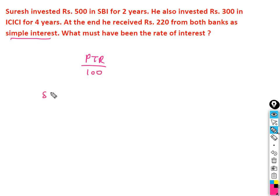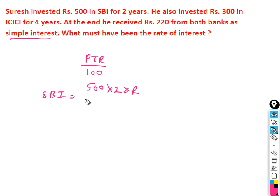First, SBI bank: principal is 500, time is 2 years, rate of interest is R, divided by 100. So the simple interest for SBI is 10R.